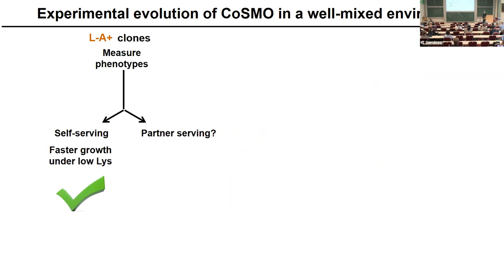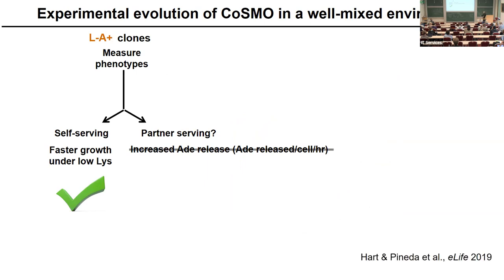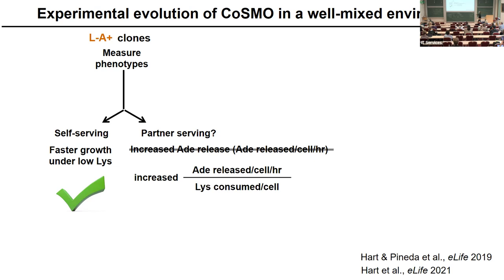What is partner-serving? One might think it means increased adenine release per cell per hour. But it turns out this thought is incorrect — it took us an article to realize that. The real way is to normalize: you normalize the adenine release rate by lysine consumption. This makes sense because all these cells need lysine to produce adenine — so this is the more quantitative perspective.